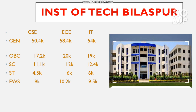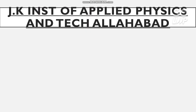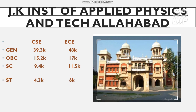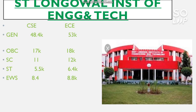The next is JK Institute of Applied Physics and Technology, Allahabad. Here is the cutoff for CS and EC. For General: 39,300 (CS) and 48,000 (EC). For OBC: 15,200 and 17,000. For SC: 9,400 and 11,500. For ST: 4,300 and 6,000. For EWS: 7,700 and 8,400.